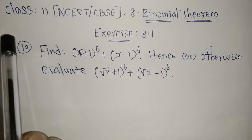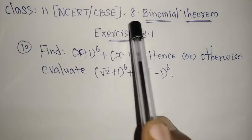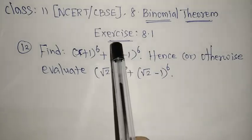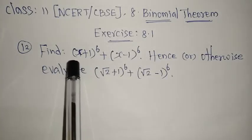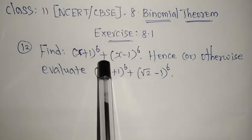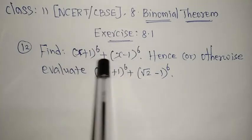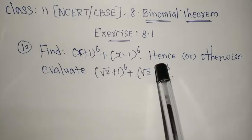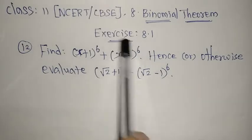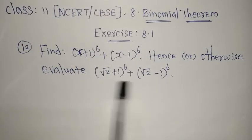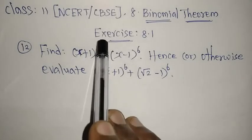Welcome to the channel. Today we are going to see Class 11 NCERT Chapter 8, Binomial Theorem. Exercise 8.1, question 12: find (x+1)⁶ + (x-1)⁶. After finding this value, we also need to evaluate a related expression using this result.